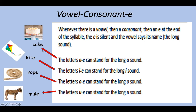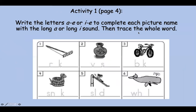And in each of these words we do not hear the E at the end. So let's look at the first activity on page four, activity one. We're going to go section by section. The directions are to write the letters A-E or I-E to complete each picture name with the long A or long I sound. Then trace the whole word.